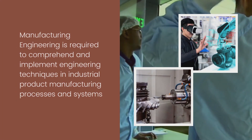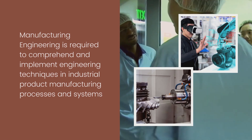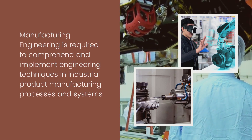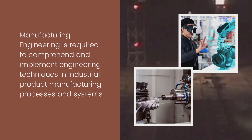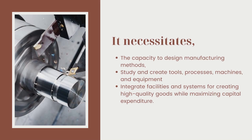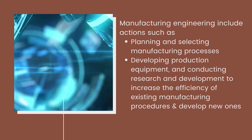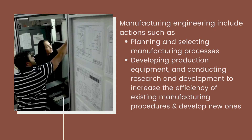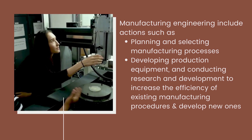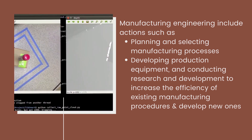Manufacturing engineering is required to comprehend and implement engineering techniques in industrial product manufacturing processes and systems. It necessitates the capacity to design manufacturing methods, study and create tools, processes, machines, and equipment, and integrate facilities and systems for creating high-quality goods while maximizing capital expenditure. Manufacturing engineering includes actions such as planning and selecting manufacturing processes, developing production equipment, and conducting research and development to increase the efficiency of existing manufacturing procedures and develop new ones.